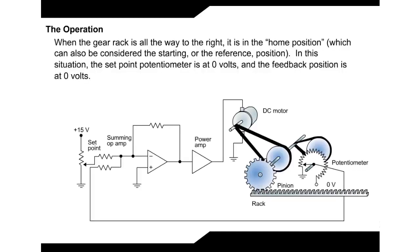The operation: When the gear rack is all the way to the right, it is in the home position, which can also be considered the starting or the reference position. In this situation, the set point potentiometer is at 0 volts and the feedback position is at 0 volts.